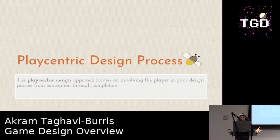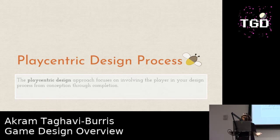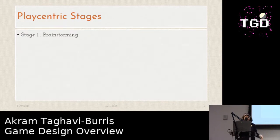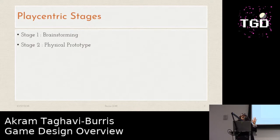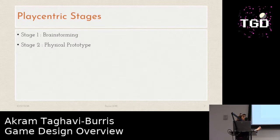The player-centric design approach involves the player throughout the design process, and we're going to look at the different stages. Each stage, you have to go back and think about your player. It's made up of seven different stages. The first stage is brainstorming — how do you come up with an idea? The second stage, often not talked about, is a physical prototype. You've come up with an idea, and you want to see if the game is even feasible, so you create a physical prototype — a board game, a card game — anything to see if the game dynamics work.